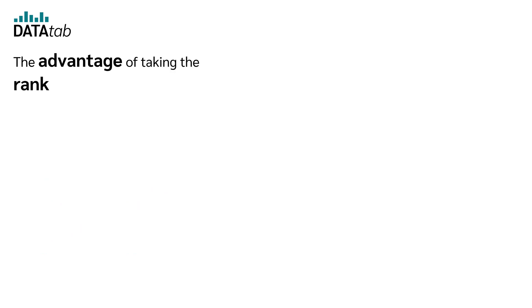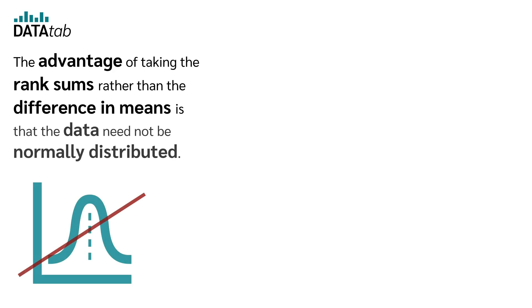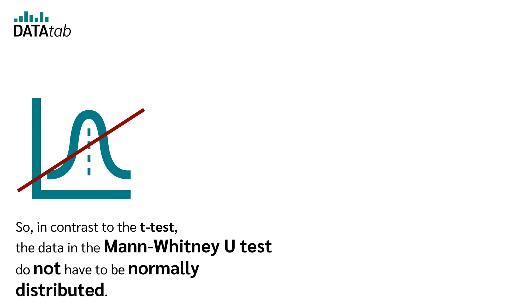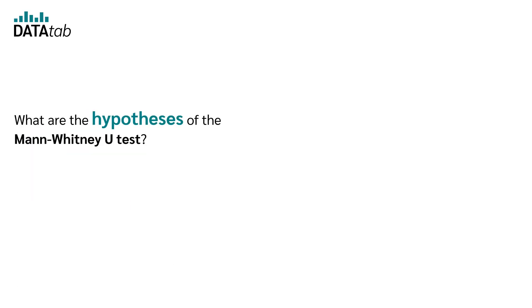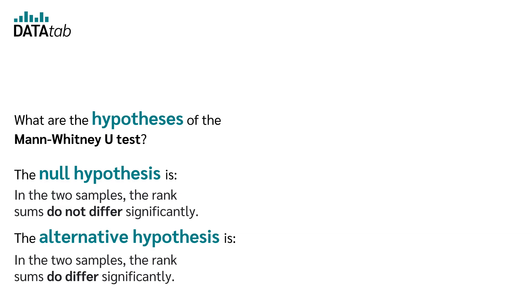The advantage of using rank sums rather than the difference in means is that the data do not need to be normally distributed. So in contrast to the t-test, the data in the Mann-Whitney-U test do not have to be normally distributed. The null hypothesis is that in the two samples the rank sums do not differ significantly. The alternative hypothesis is that the rank sums do differ significantly.